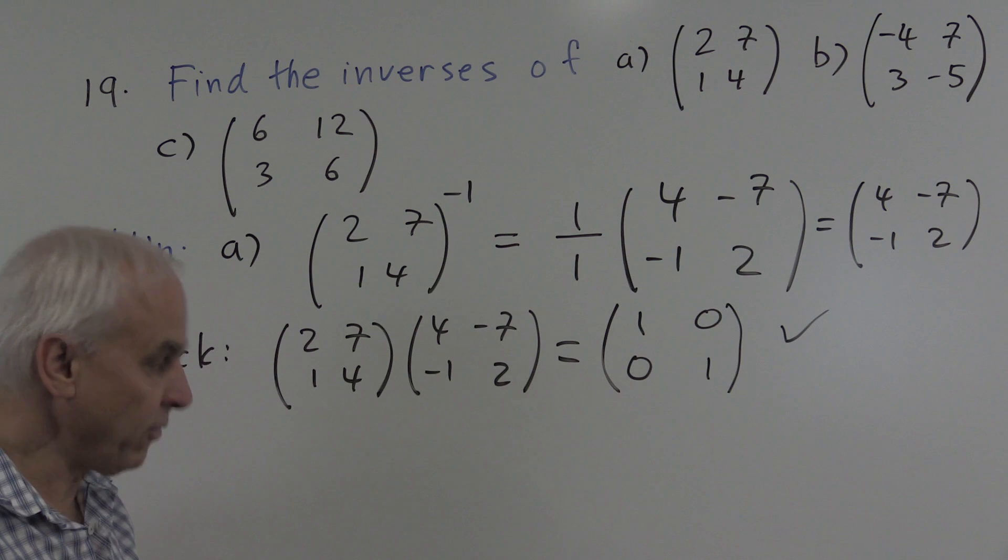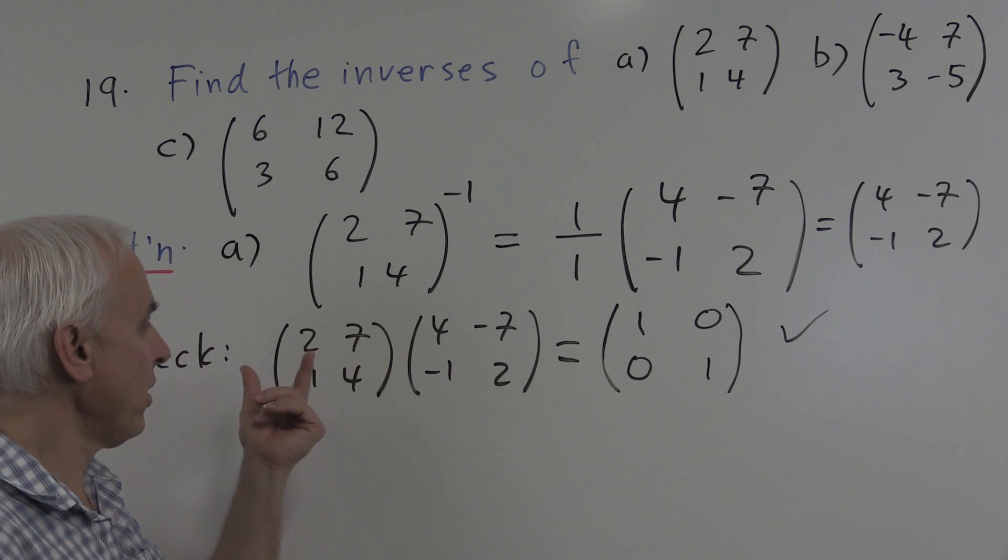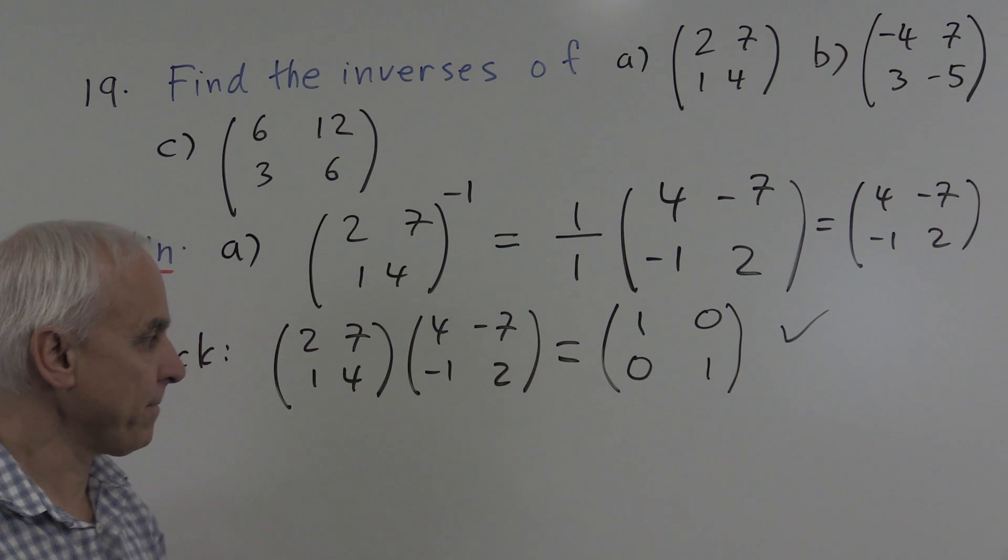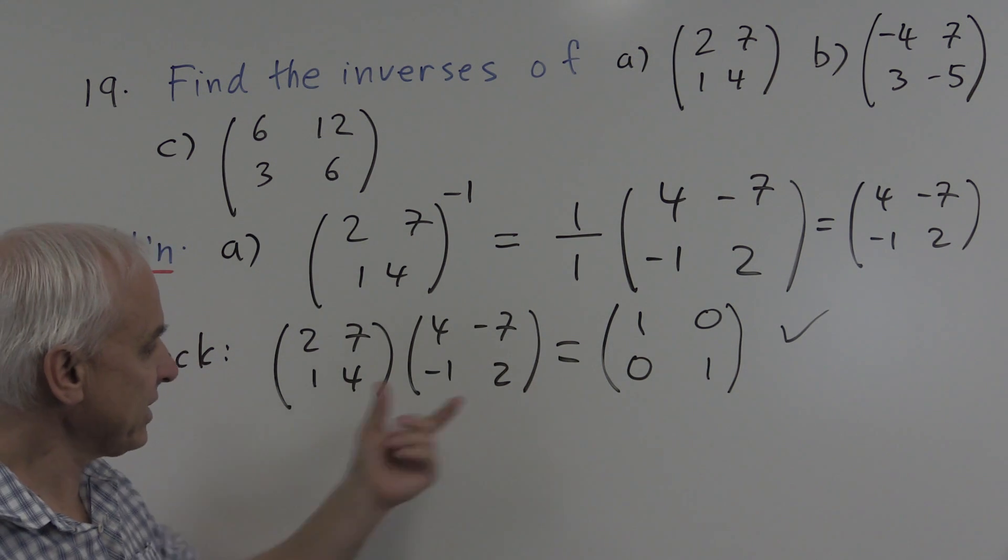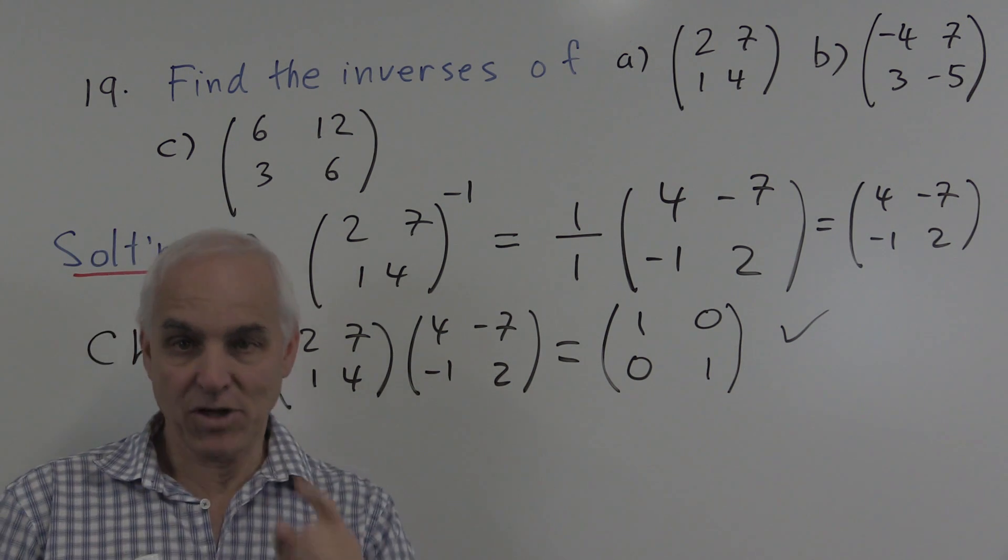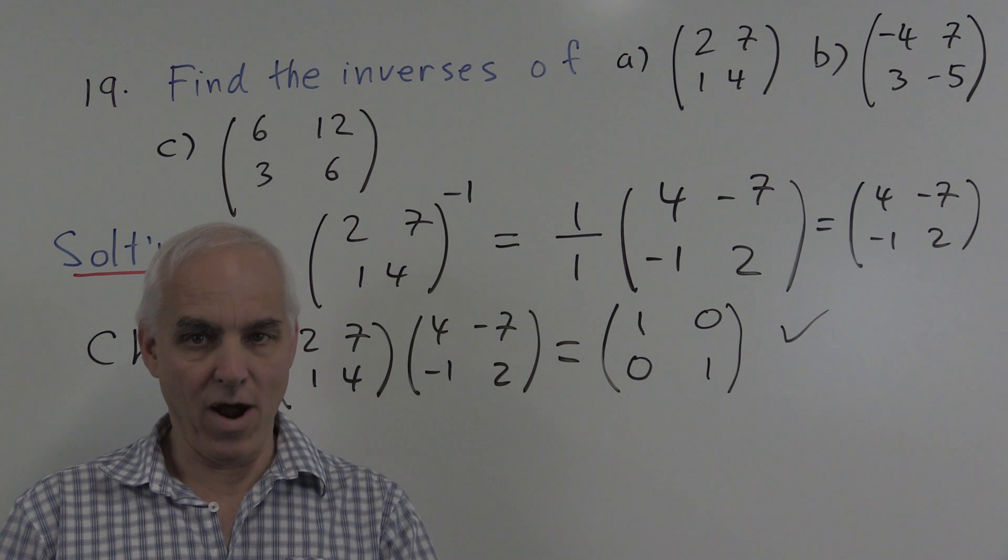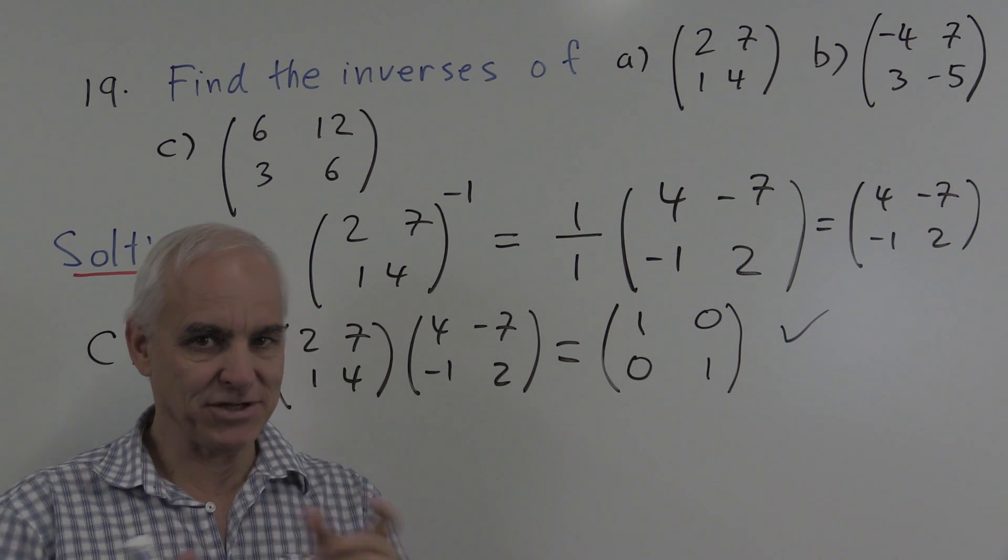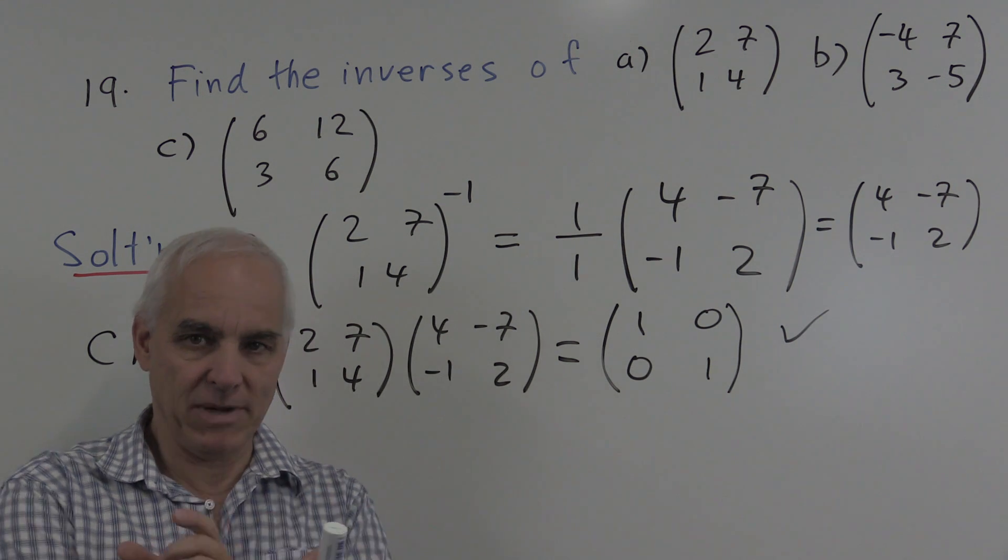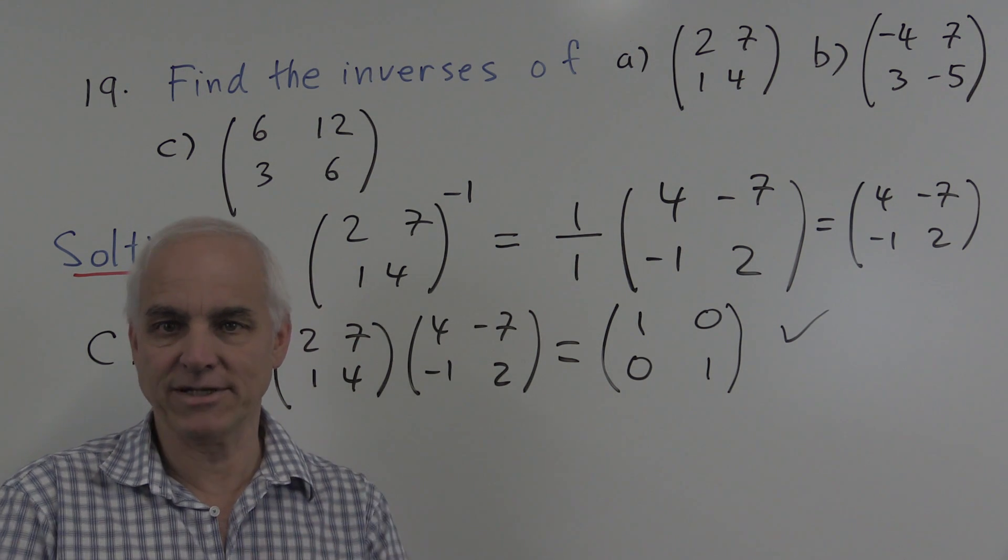So that's what we've done. We found the matrix which has the property that when we multiply it by the given matrix, we get the identity. And we might remark that this matrix has the property that even if you multiply it by this matrix on the other side, you still get one. Usually matrices don't commute, but when you find an inverse of a matrix, it turns out to be an inverse on both sides.